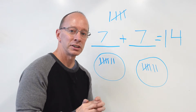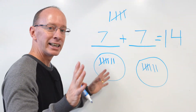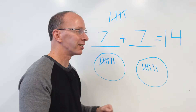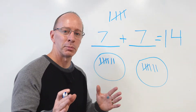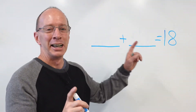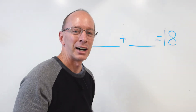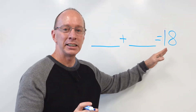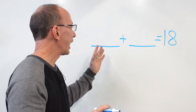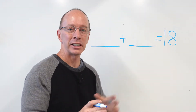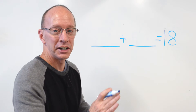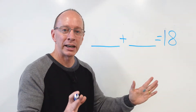One step closer to getting to be an expert in this — a math ninja. All right, let's do another problem. You ready? We got the problem: some number plus another number equals 18. An addend plus another addend equals 18. We've got to take that 18 and do our ninja chop — split it in half.